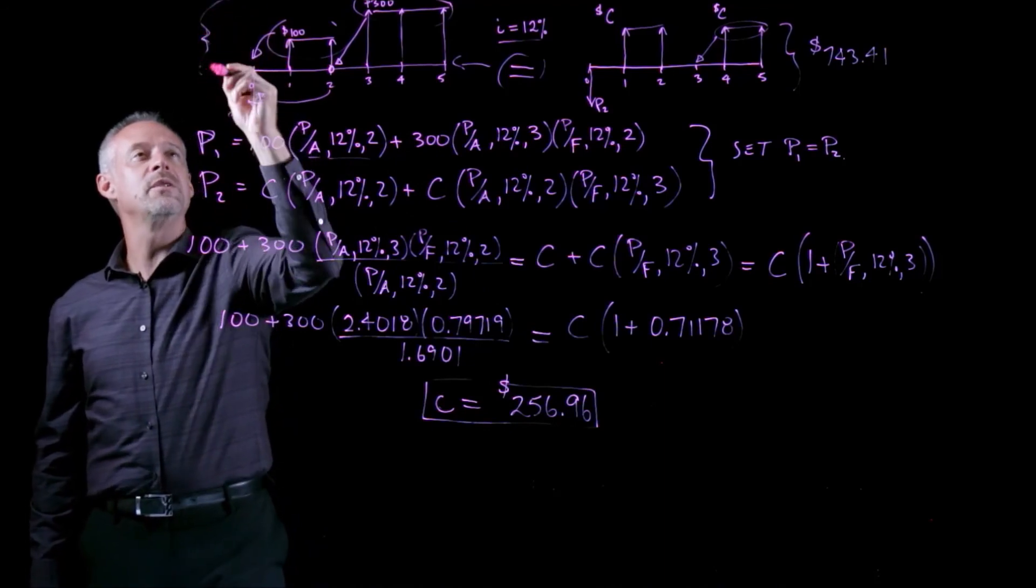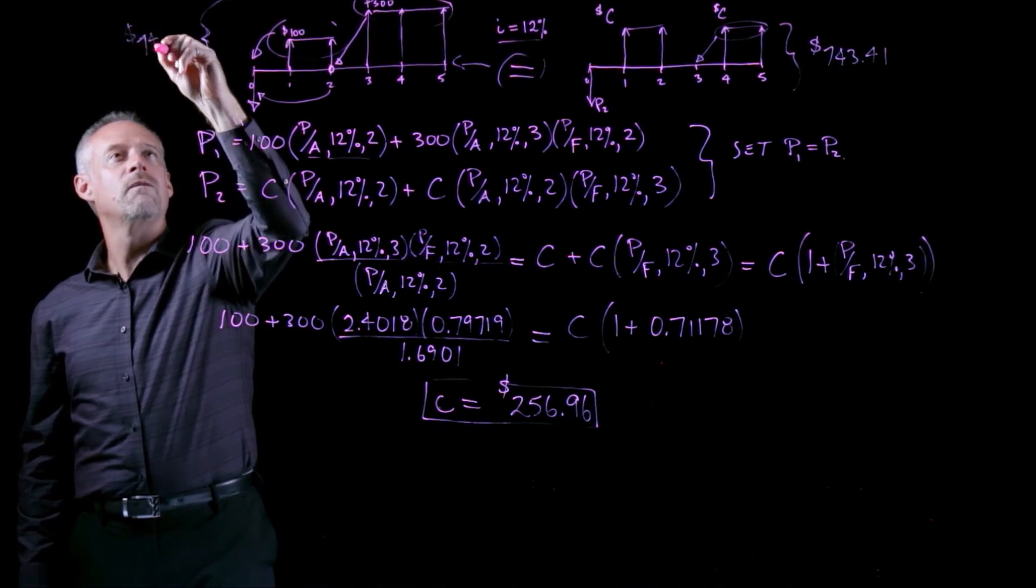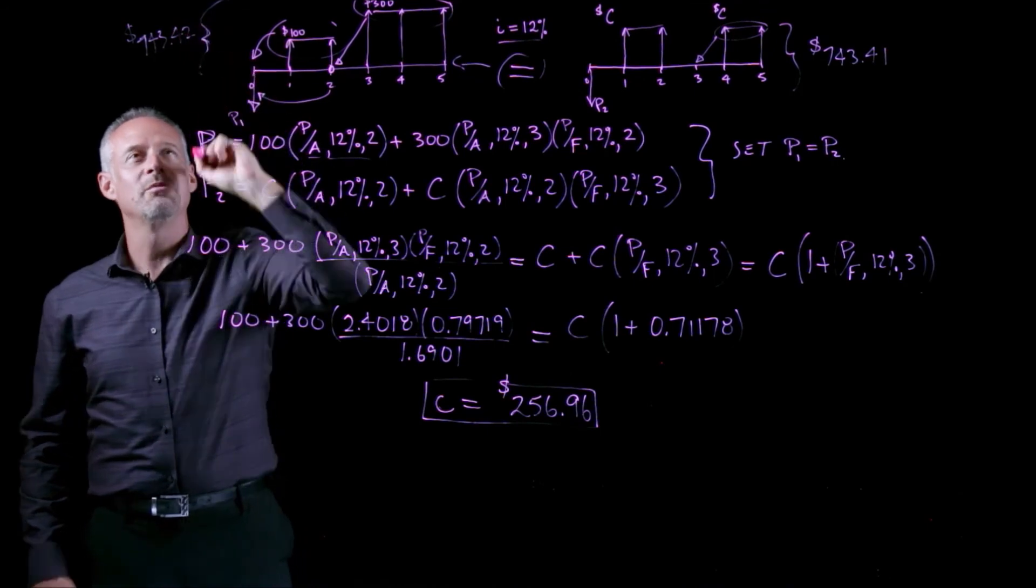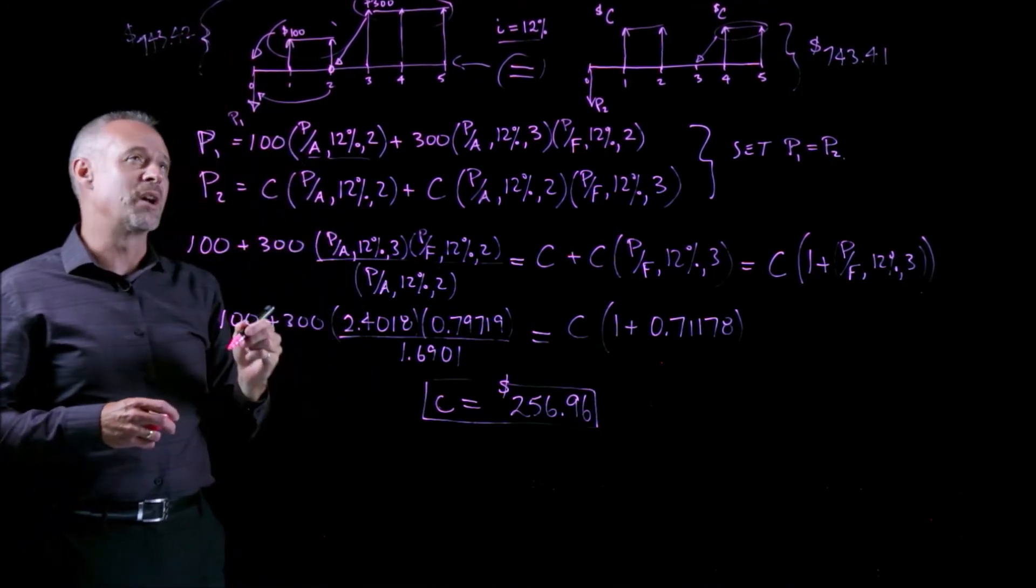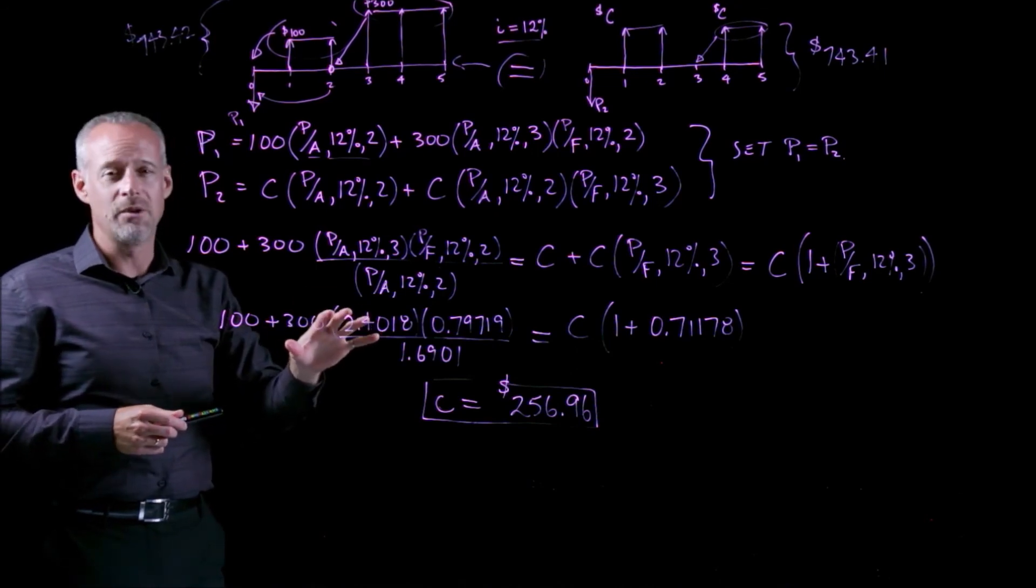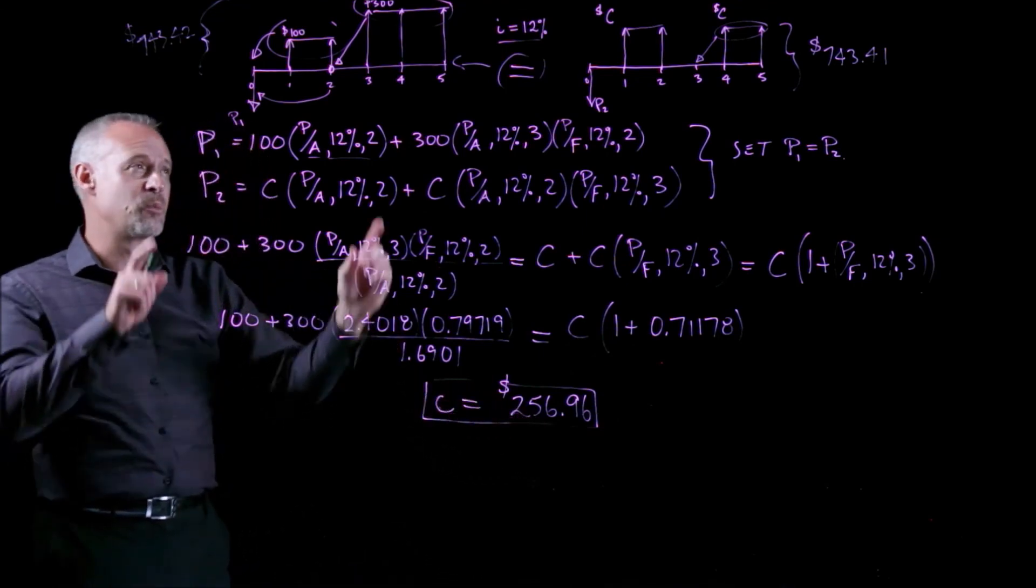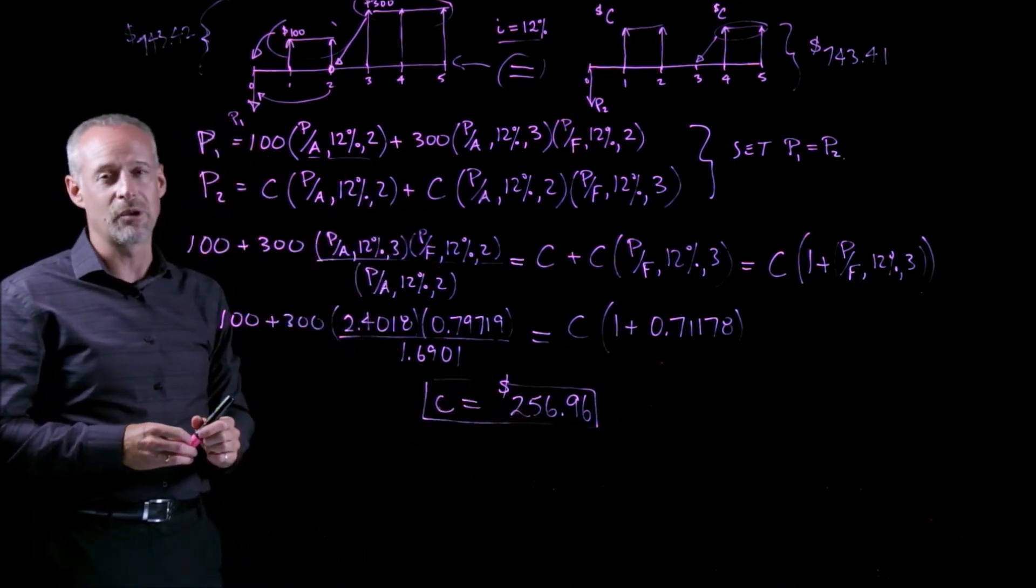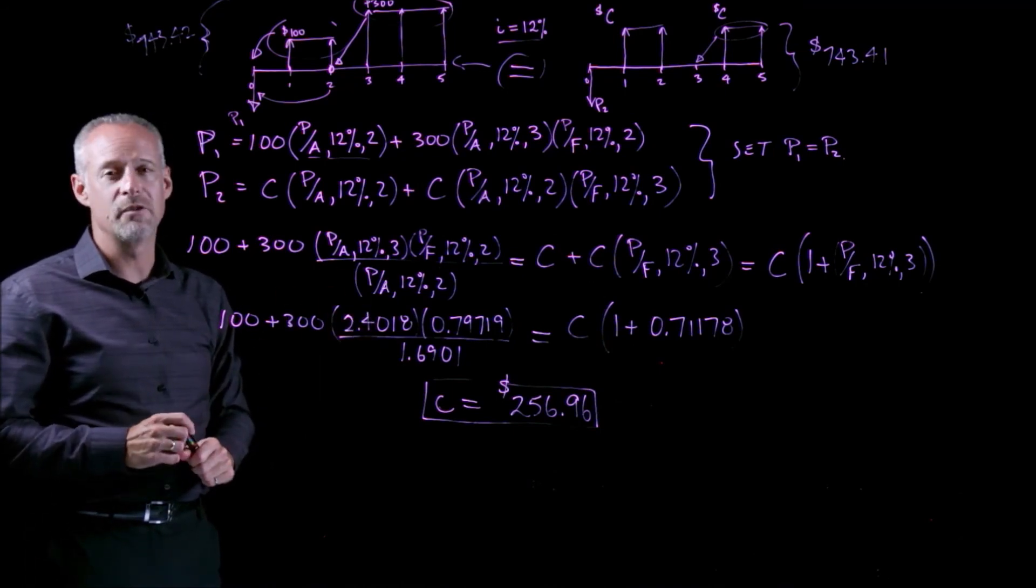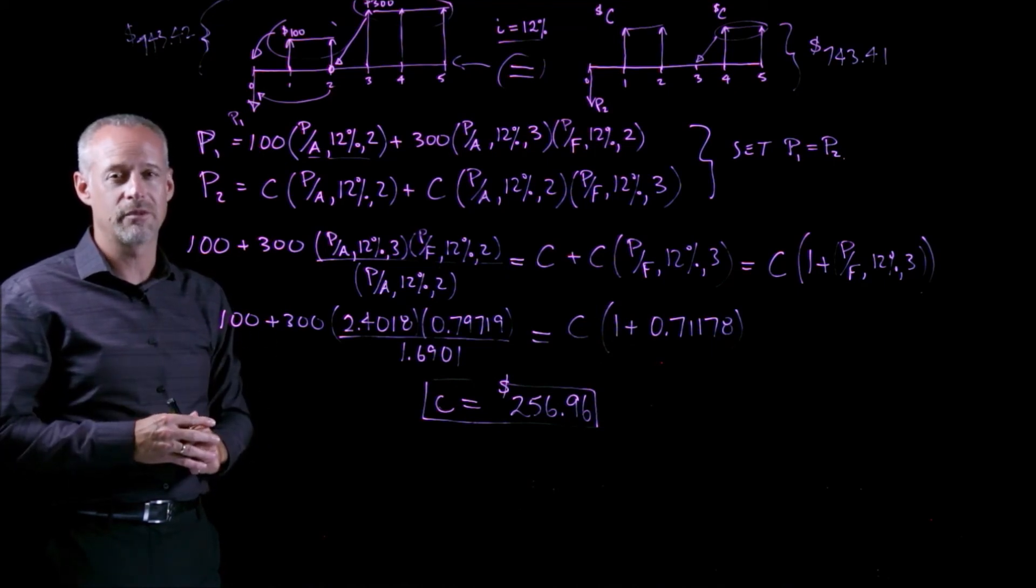And if you do the same thing over here, using the same compound interest factors, you should end up with 743.42. Kind of losing ink here, but that's okay, I'm pretty much done. Anyway, using the compound interest factors, you'll end up showing that this value of C actually produces equivalence within 1 cent, if you'd like to go back and check that. But anyway, good practice problem for time value of money calculations, and a good way to illustrate the concept of equivalence.